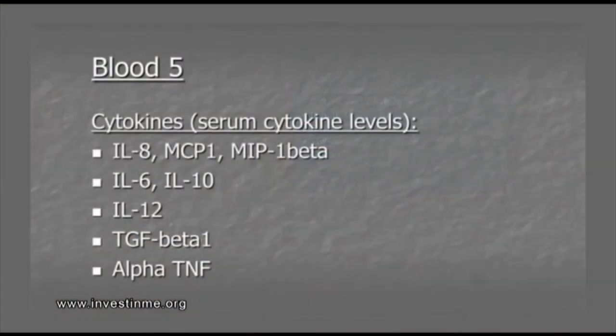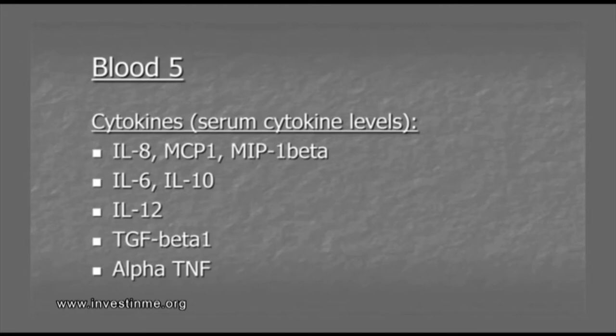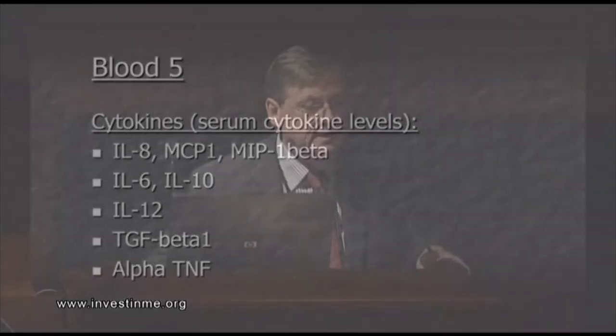About cytokines — Judy is going to talk more about cytokines and XMRV, so I didn't include everything. But in our panel on cytokines, we see a clear signature. IL-8, MCP-1, and MIP-1 beta are mostly increased — these are chemokines related to macrophages. Less increased are IL-6, IL-10, and IL-12. TGF-beta can be increased or extremely low. And as Nancy Klimas has shown, a subgroup of patients has increased TNF-alpha.